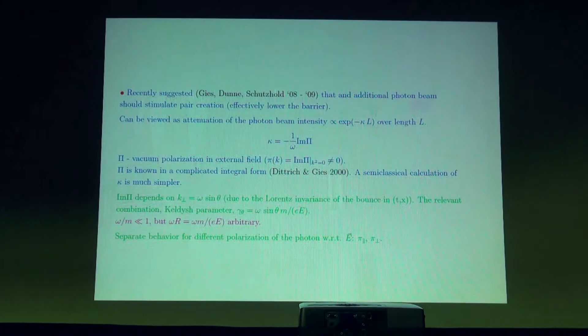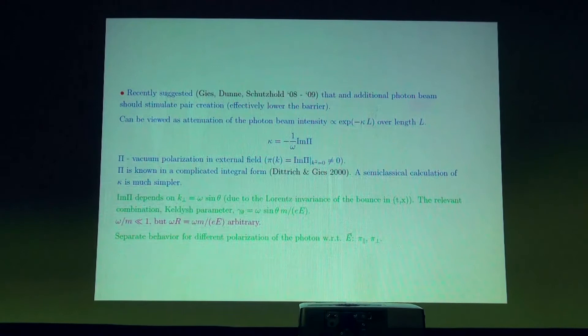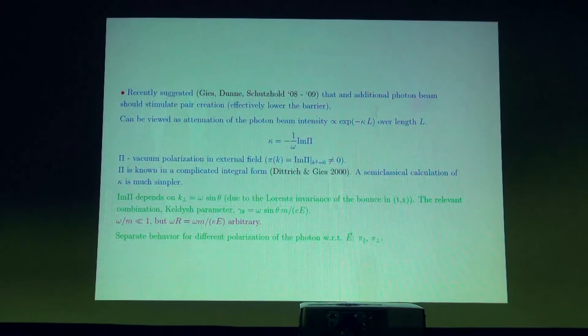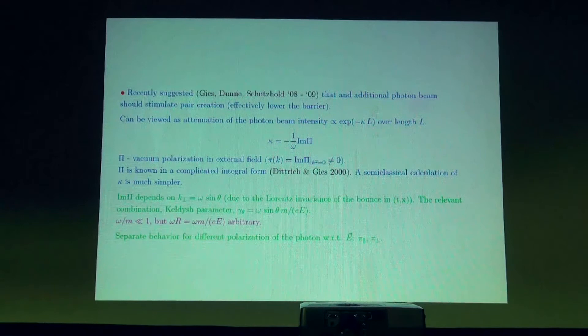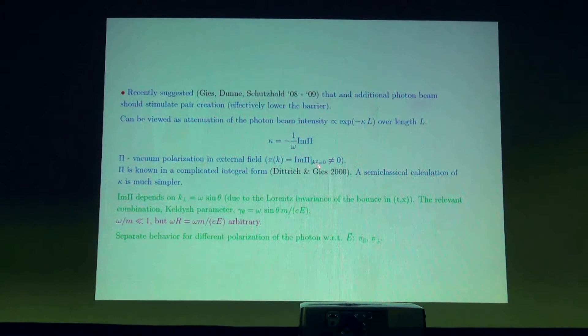The problem then boils down to calculating the creation of pairs by a single photon. Creation in vacuum is impossible because of energy-momentum conservation, but in an electric field it can happen because energy is supplied by the external strong electric field. This amounts to calculating a photon propagator — the polarization operator — in an external electric field. This develops an imaginary part for a real photon when k squared equals zero (on the mass shell). Such a polarization operator is known in principle, but in a very complicated integral form. Any practical extraction of a formula from this integral is a separate big scientific work.